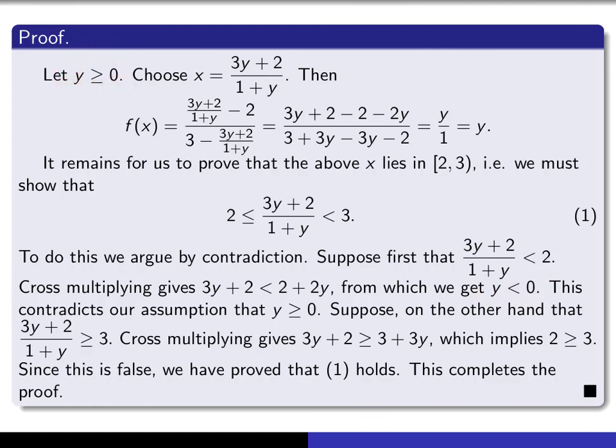On the other hand, suppose that this quantity is bigger than or equal to 3. In other words, it's on the other side of 3. Once again, cross-multiply. That gives you this. The 3y's cancel, and you get 2 bigger than or equal to 3, which is impossible. And therefore, that proves that our x does indeed lie in this interval. And that completes the proof.